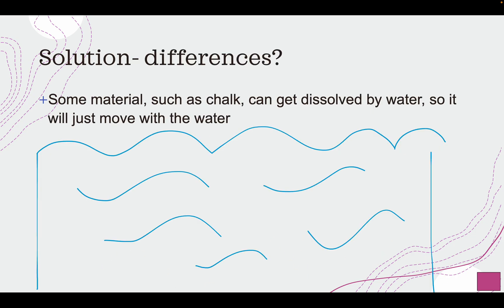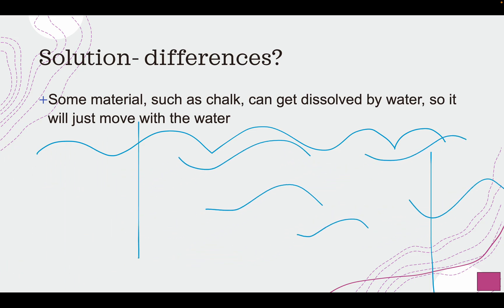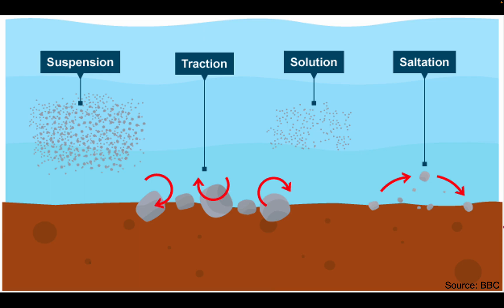Finally, solution: some materials such as chalk or limestone can get dissolved by the water and just move with it. In erosion, solution is when rocks get dissolved into the seawater. In transportation, solution is when that dissolved material simply moves with the water as part of the solution. Summary: traction — giant boulders roll along the seabed. Suspension — really light rocks or sand suspend and move with the current. Solution — dissolved rocks move like water. Saltation — rocks too heavy to suspend but too light to roll just hop along the seabed.